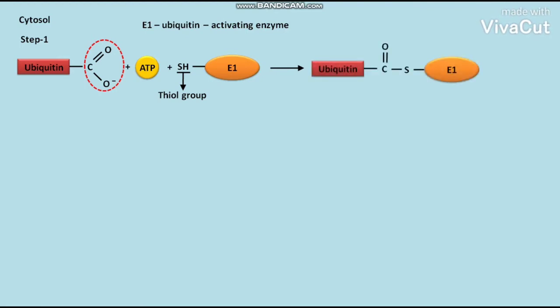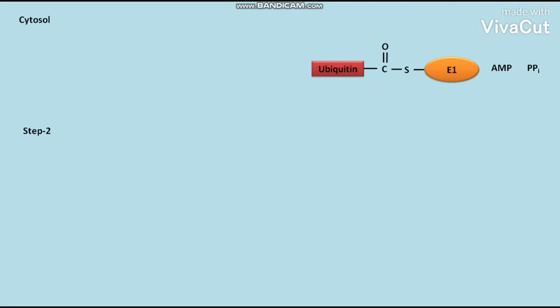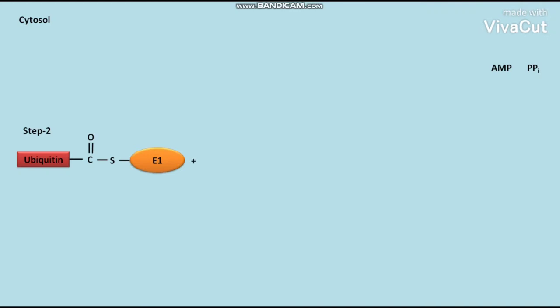The ATP in this reaction is converted to AMP and inorganic pyrophosphate. In step two, the E1-ubiquitin complex in presence of another thiol group containing enzyme called E2, or ubiquitin conjugating enzyme, is converted into a freed thiol group containing E1 and an E2-ubiquitin complex.